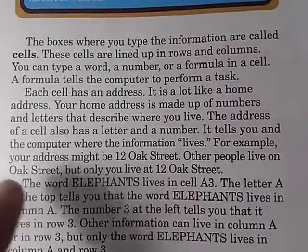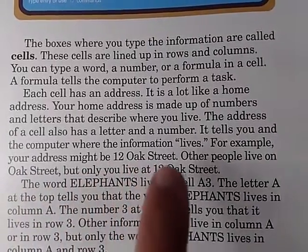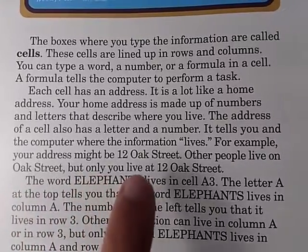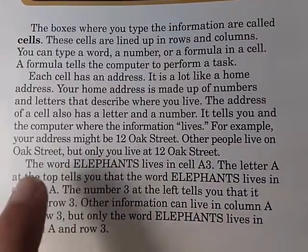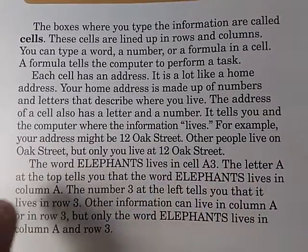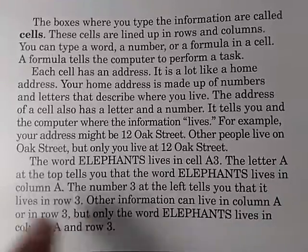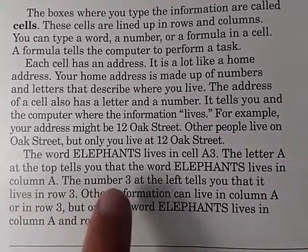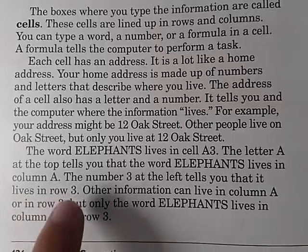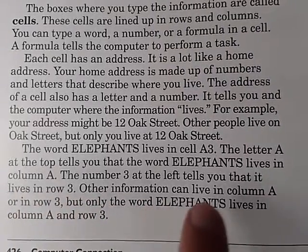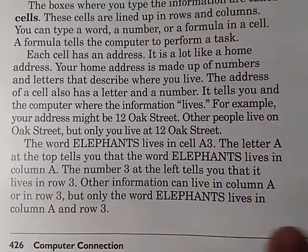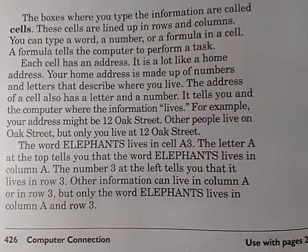For example, your address might be 12 Oak Street. Other people live on Oak Street, but only you live at 12 Oak Street. The word 'elephants' lives in cell A3. The letter A at the top tells you that the word 'elephants' lives in column A. The number 3 at the left tells you that it lives in row 3. Other information can live in column A, but only the word 'elephants' lives in column A in row 3.